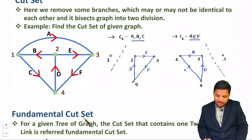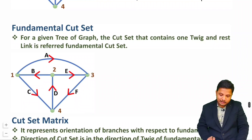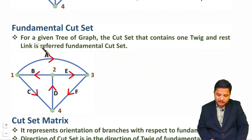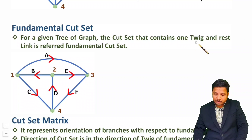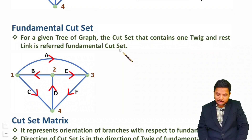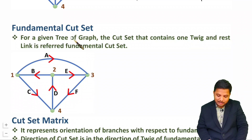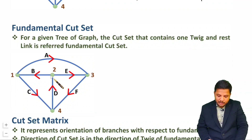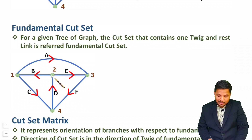Now let us understand what is fundamental cut set. In cut set we remove some branches, but for fundamental cut set, first you need to identify the tree of the graph. The cut set must then contain one twig and the rest links — that will be the fundamental cut set. Based on fundamental cut sets we can form the cut set matrix. When calculating a tree, you should know that the number of branches in the tree equals total number of nodes minus 1.